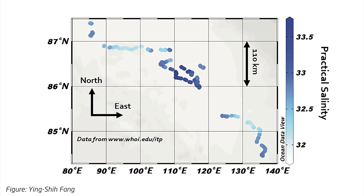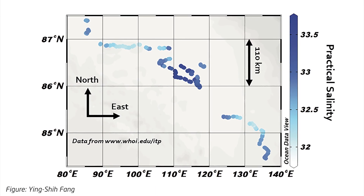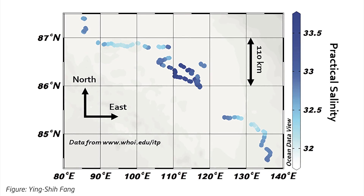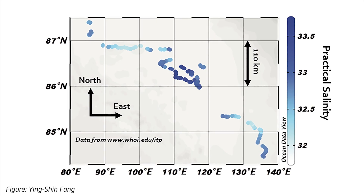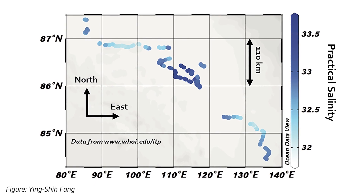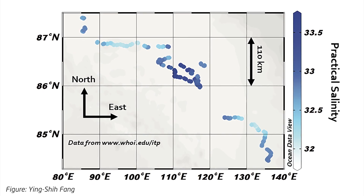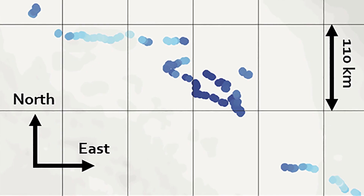Some of these processes you can already see in data that we've obtained before Mosaic started. Here's a picture near the starting region of where Mosaic started, taken a few years earlier by an autonomous drifting buoy. This buoy was mounted in the ice and measured a few hundred meters below in the ocean. This is salinity near the surface, and it shows that there is a large-scale gradient — you can see over scales of a hundred or more kilometers that salinity is varying.